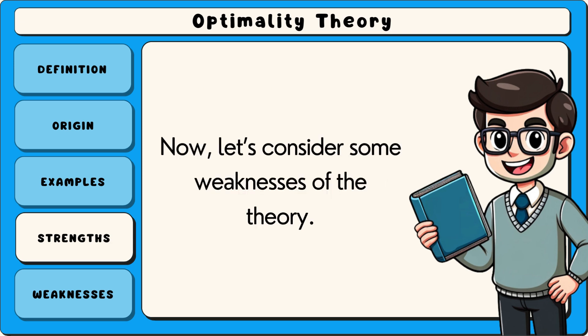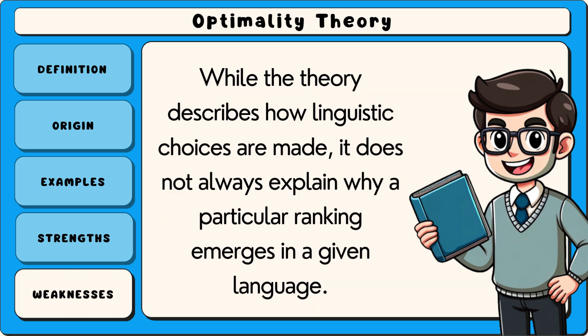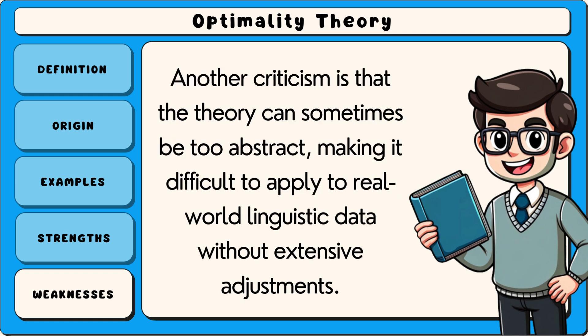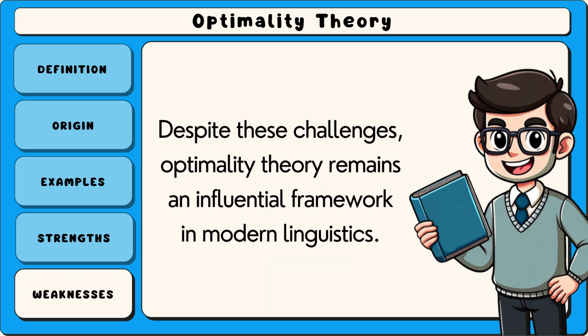One major weakness of optimality theory is that it lacks clear explanations for why certain constraints exist and how they are ranked in different languages. While the theory describes how linguistic choices are made, it does not always explain why a particular ranking emerges in a given language. Another criticism is that the theory can sometimes be too abstract, making it difficult to apply to real-world linguistic data without extensive adjustments. Additionally, some linguists argue that optimality theory does not fully account for the role of historical change in shaping languages over time. Despite these challenges, optimality theory remains an influential framework in modern linguistics.